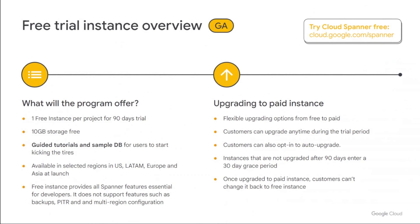We just launched free trial instances. Basically, you get one free instance per project, 10 GB of storage for free, and a 90-day free trial period. You can create a free trial instance and keep it as a Spanner instance. We've provided tutorials and sample apps so you can familiarize yourself with Spanner very easily. It offers many of the capabilities available in Spanner, and it's much easier to try it out. You have flexibility to upgrade to a paid instance any time within those 90 days, and if you haven't upgraded after 90 days, we give you one month of grace period.